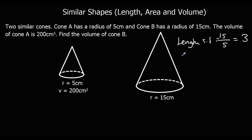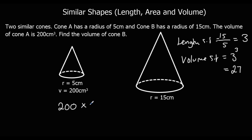The volume scale factor is 3 cubed, because it's volume it's cubed, and that is 27. So to find the volume of cone B, we take 200 and multiply by the volume scale factor, which is 27. 2 times 27 is 54, then we add on the two zeros, giving us 5,400 centimetres cubed.